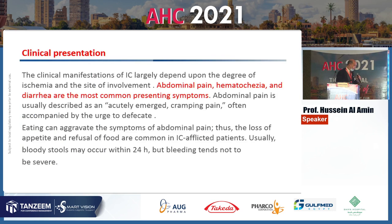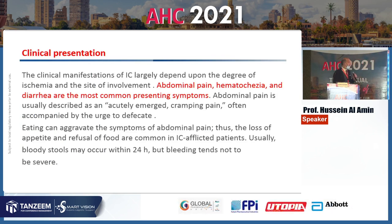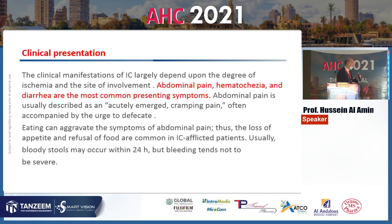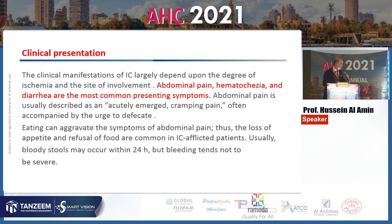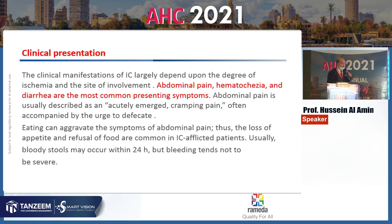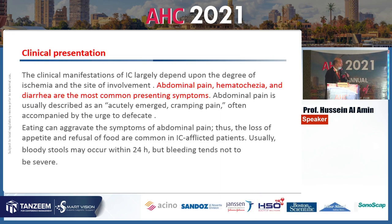Clinical presentation depends on the degree of colonic wall involvement. The most common presenting features are abdominal pain, tenderness, and diarrhea. The acute onset of pain can help differentiate ischemic colitis from other colonic diseases such as inflammatory bowel disease. A high index of suspicion is required to diagnose ischemic colitis because of the ambiguity of symptoms, and eating can aggravate symptoms so patients usually refuse to eat.